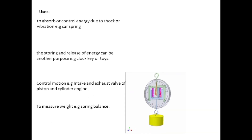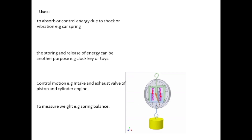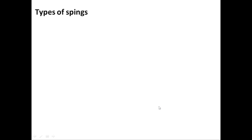A spring is also used in the spring balance to measure weight. Two springs are used, and when a mass is attached, the pointer rotates and shows the mass on the scale. Now let's talk about the types of springs in more detail.